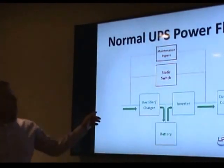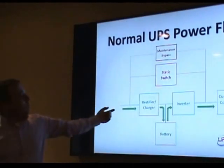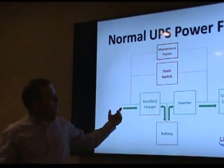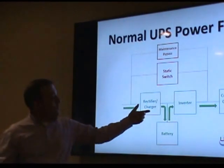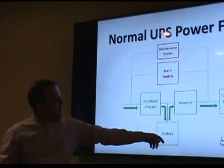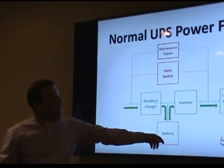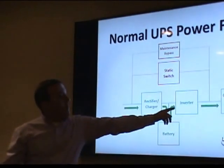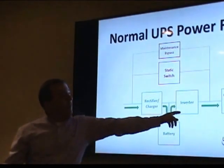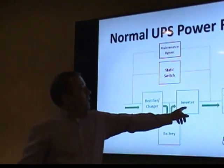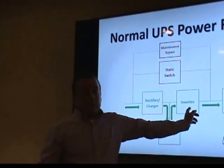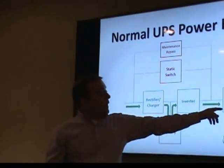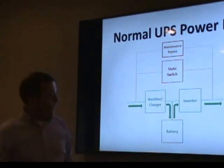So like I was saying, this is the power flow for a UPS system. Power comes in from the wall through the charger, continues to charge the batteries, from the batteries to the inverter. The inverter makes it from DC back to AC and then out to the computer load.